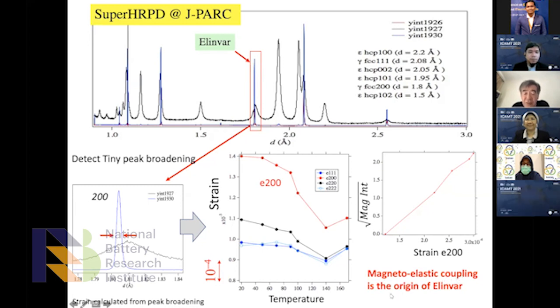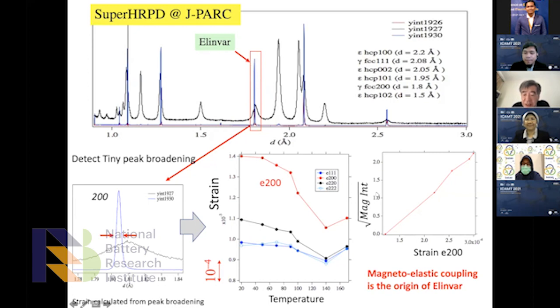This is obvious evidence that magnetoelastic coupling is the engine of the Invar effect. We haven't yet solved why this happens, but at least high resolution diffraction can show this kind of clue to solve this problem.